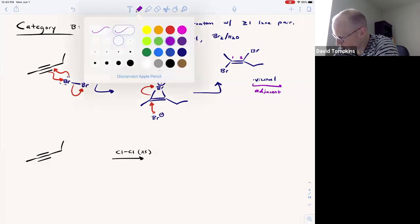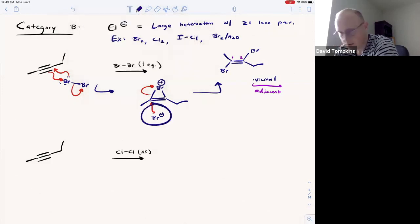And stereochemically, because it goes through a bridge intermediate, that nucleophile must attack anti to the bridge. So in this case, we get the two bromines trans about the double bond or anti to one another. So that produces the E alkene. Further reaction could continue if we use another equivalent of bromine or excess.